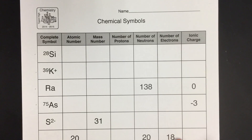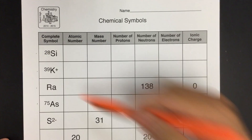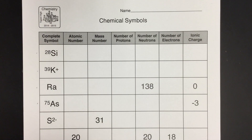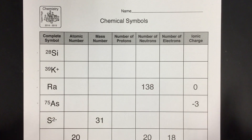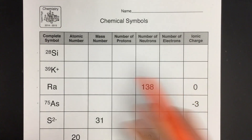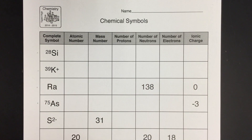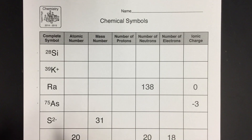Let's do a few questions from your chemical symbols homework assignment. Notice the way this homework works — it's like a puzzle. You're given some pieces of information for each element, and you're only given just enough where you can figure out the rest. So if you think you're stuck, try to look at the problem a different way, because in fact you are given enough information. Sometimes you just have to think a little bit outside the box.